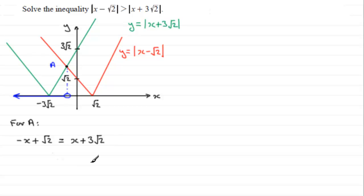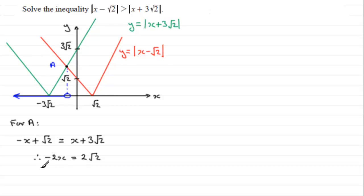All we've got to do is solve for x. Subtracting x from both sides gives minus 2x, and subtracting root 2 from both sides gives 3 root 2 minus root 2, which is 2 root 2. Dividing both sides by minus 2, we end up with x equals minus root 2.